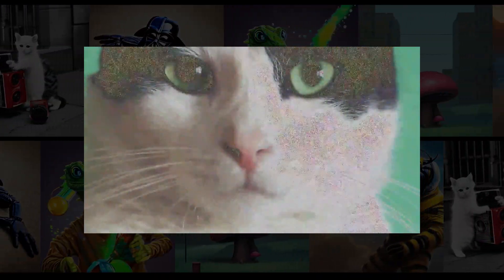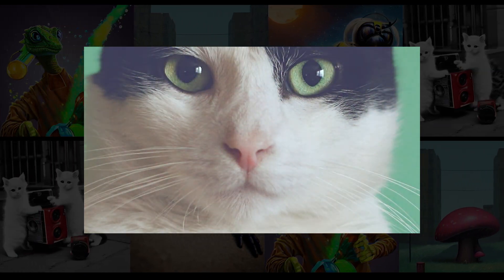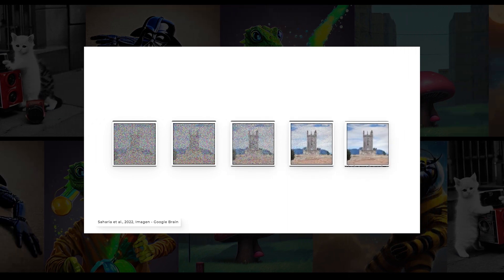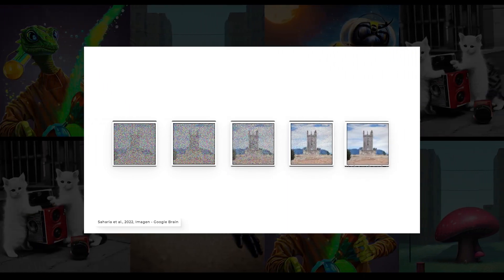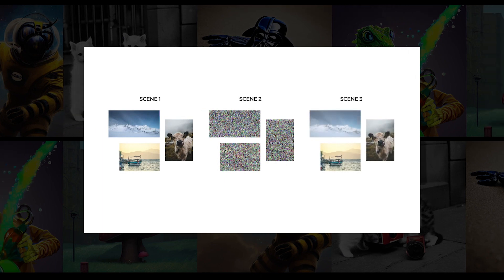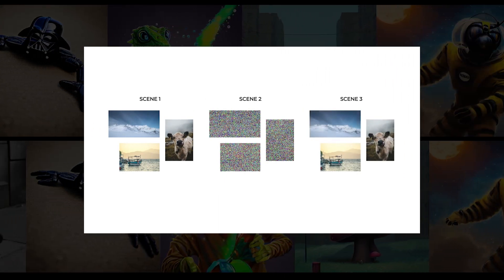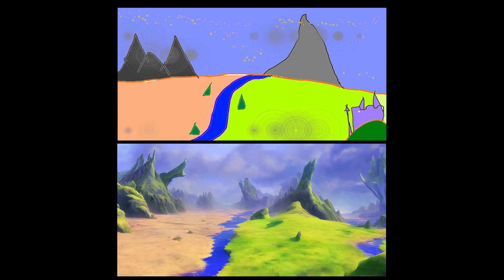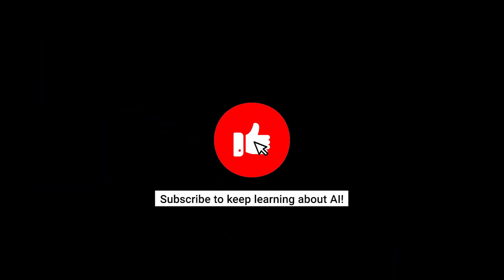Quickly, diffusion models use noise to generate images. Put simply, this means they will train a model to iteratively add noise — basically somewhat random values their model can control — to an initial set of random pixels in order to end up with a real image. This is thanks to a clever training process of taking image examples and randomly adding noise until the image is completely noise. We then use the reverse process to regenerate the image with our model once it learns which noise to add to reconstruct the wanted image. Please check out my video for a more detailed explanation of this architecture.